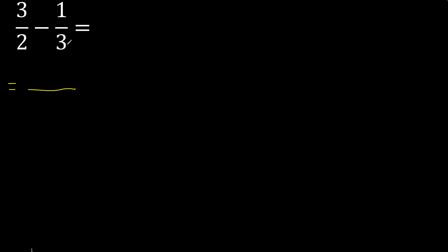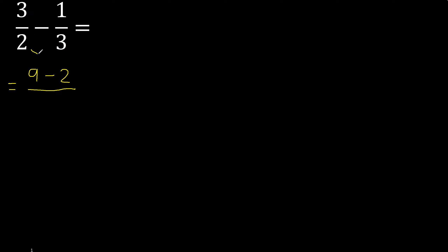First, multiply like this: 3 multiplied by 3 is 9, minus 2 multiplied by 1 is 2. Here, 2 multiplied by 3 is 6.